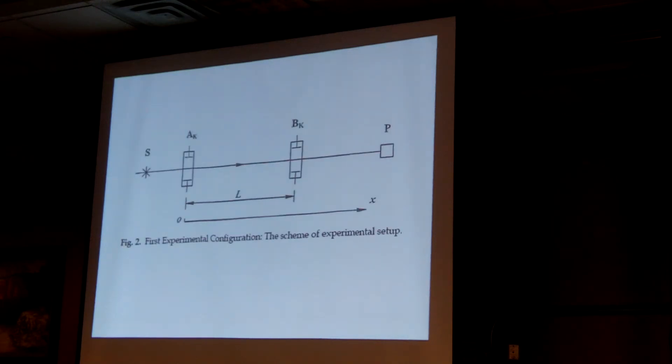This is the first diagram that the two Chinese guys produced in their paper. On the left hand side, AK is what they call a Kerr cell.